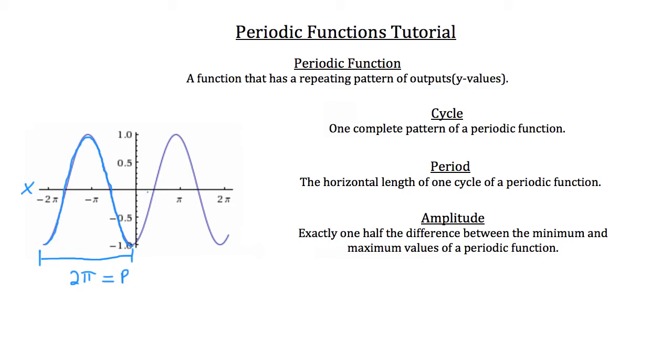Now let's take a look at the amplitude. Remember that the amplitude is just one half the distance from top to bottom, or the difference between the minimum and maximum values of a periodic function, of each of these cycles.